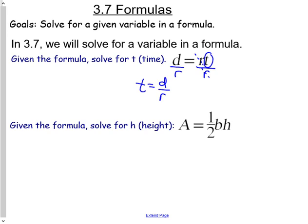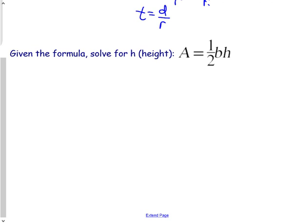Next formula: given the formula, solve for h which is height and area equals half base times height. So again circle or some sort of identifying over it. And what's going on, right? With half times base times height we've got two things going on. So we're going to have two operations.